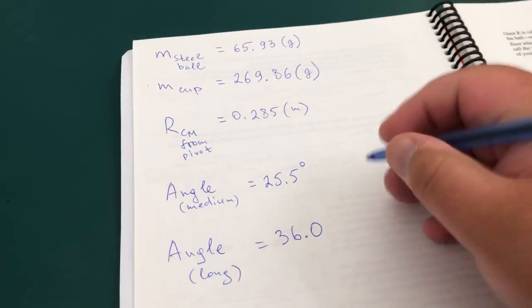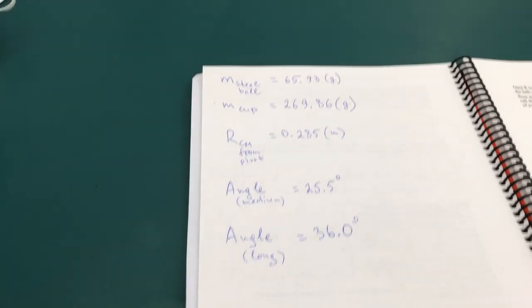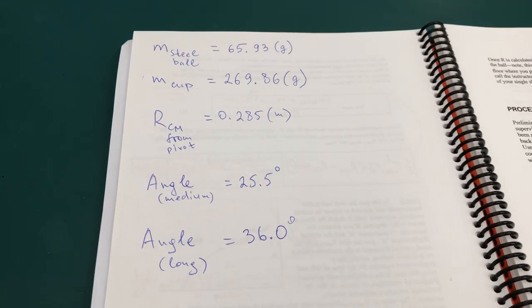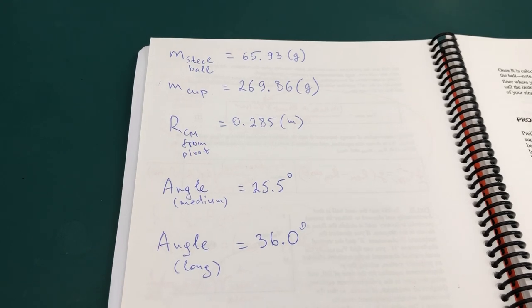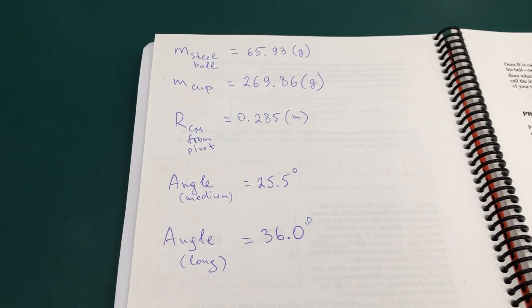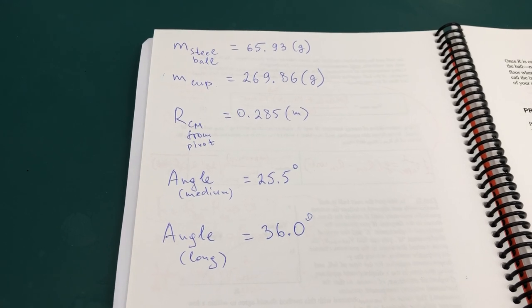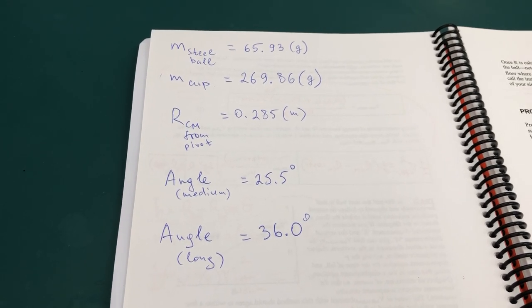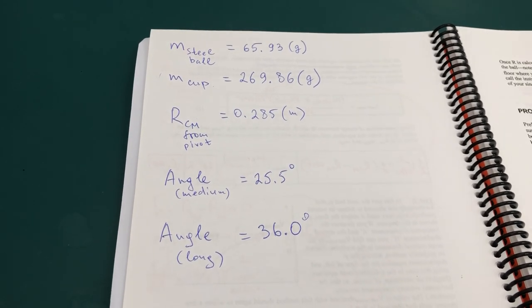And this concludes the part where we use the conservation principles - the conservation of momentum and then conservation of energy to solve for the initial velocity of the ball.